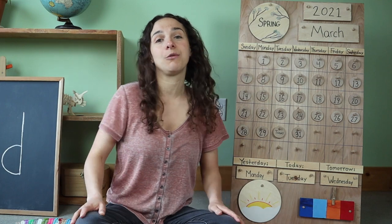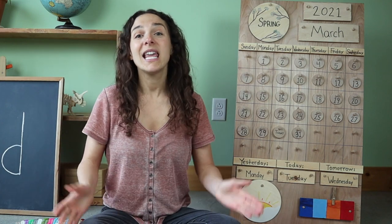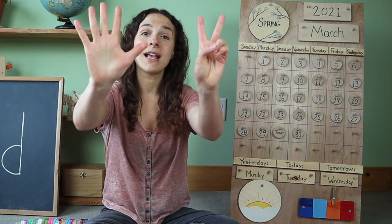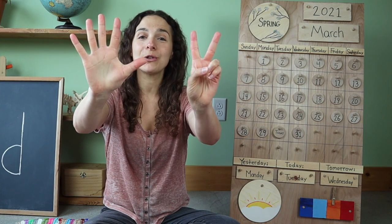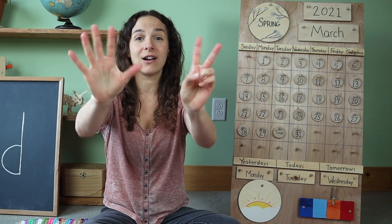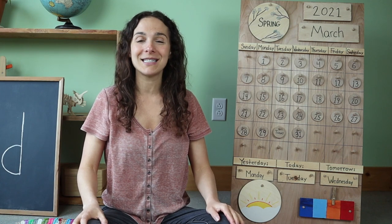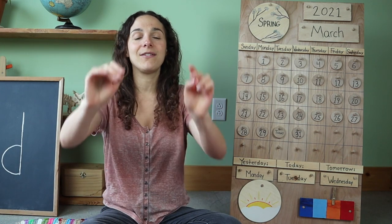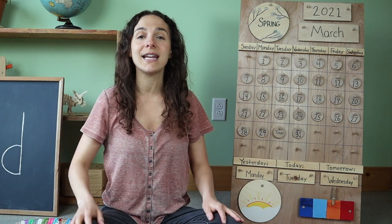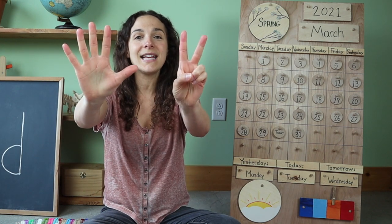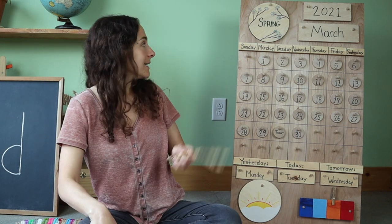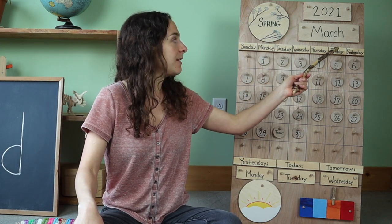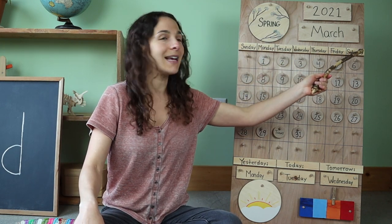Let's move on to the days of the week song. Can you show me seven fingers? Because we have seven days in our week, we hold up seven fingers for the next song. If you know the words, you can sing along with me. There are seven days, there are seven days, there are seven days in a week. Sunday, Monday, Tuesday, Wednesday, Thursday, Friday, Saturday.